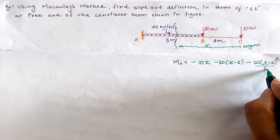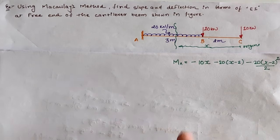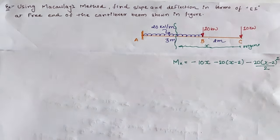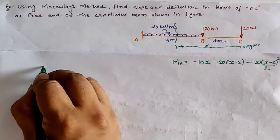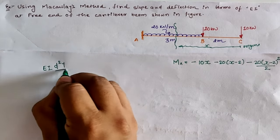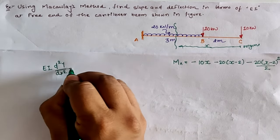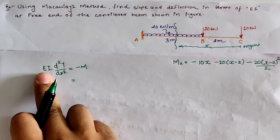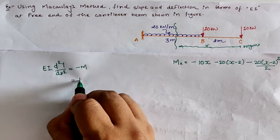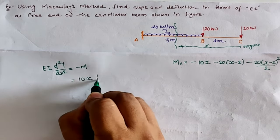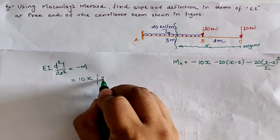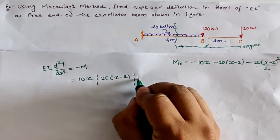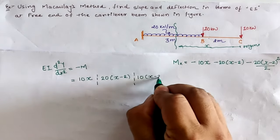At the section we have the moment as calculated. Now using the elastic equation relationship EI d²y/dx² = minus M, and putting this value we have the equation as: 10 into x, then separating all terms: 20 into (x minus 2), and the rest value is 10 into (x minus 2) squared.